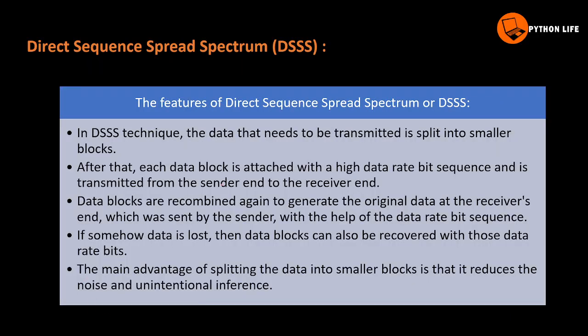In DSSS, the data that needs to be transmitted is split into smaller blocks. Each block is attached with a high data rate bit sequence and is transmitted from the sender to the receiver. At the receiver, the data blocks are recombined again to regenerate the original data.